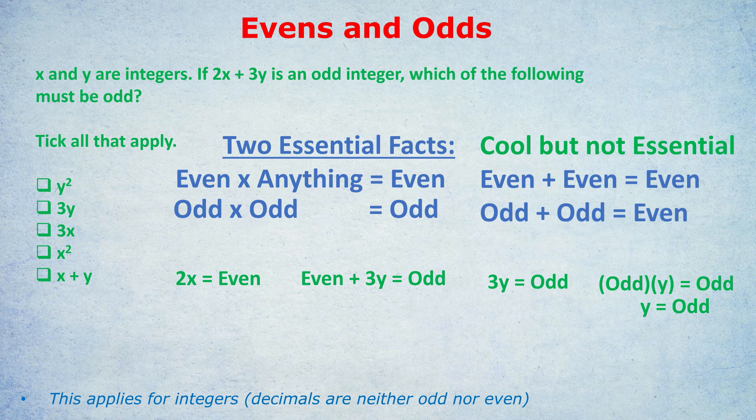Isn't that amazing? We deduced this step by step using those even and odd rules. Now that we've deduced that Y is an odd number, let's go through all of these answers. The question is: which of the following must be odd?